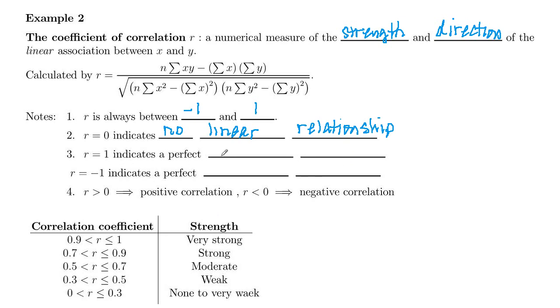R equals one indicates a perfect positive correlation between your two variables.